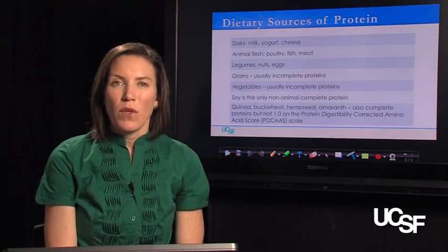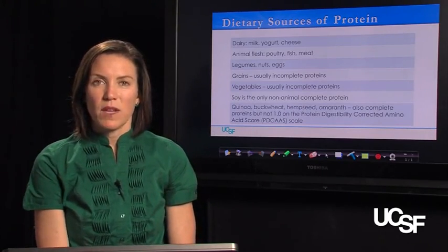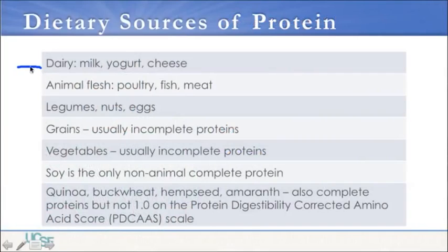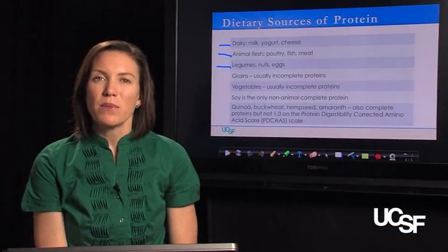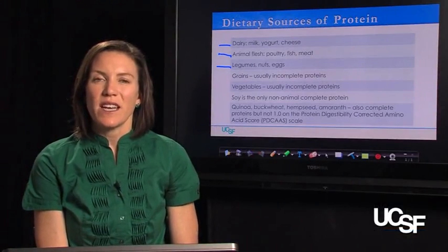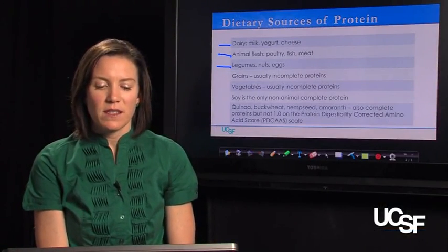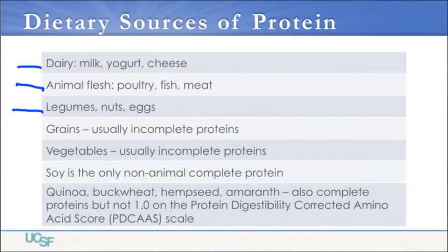In our diets, we get protein from both animal and plant sources. Dairy foods like milk, yogurt, and cheese contain protein, as do animal flesh from poultry, meat, and fish, as well as legumes, nuts, and eggs. Grains contain a little bit of protein, although they tend to be incomplete proteins — meaning they do not contain all of the essential amino acids. Vegetables also have incomplete sources of protein, providing a few grams here and there.